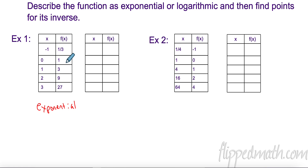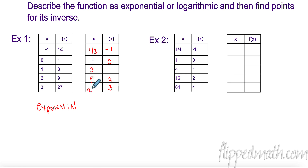Now let's find the inverse of this function. I take my domain and make it my range: negative one, zero, one, two, three. And I take my range and make it my domain: one-third, one, three, nine, twenty-seven. Because with inverses, x-values become y-values and y-values become x-values.